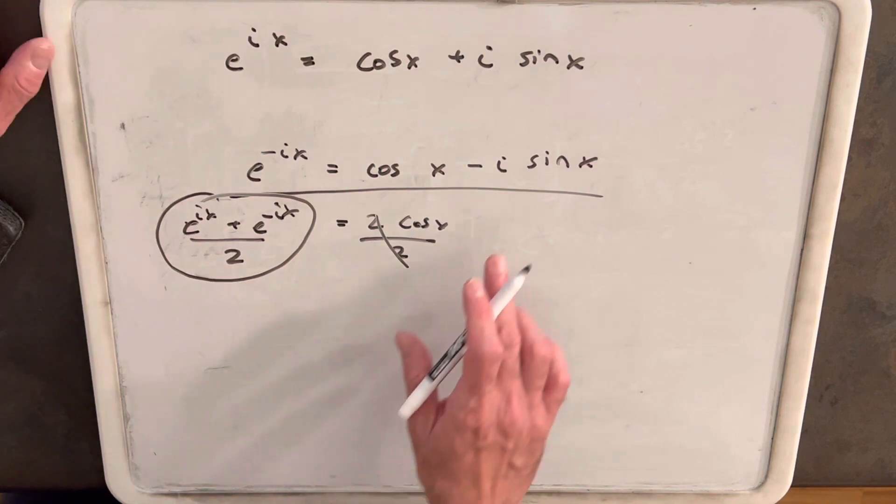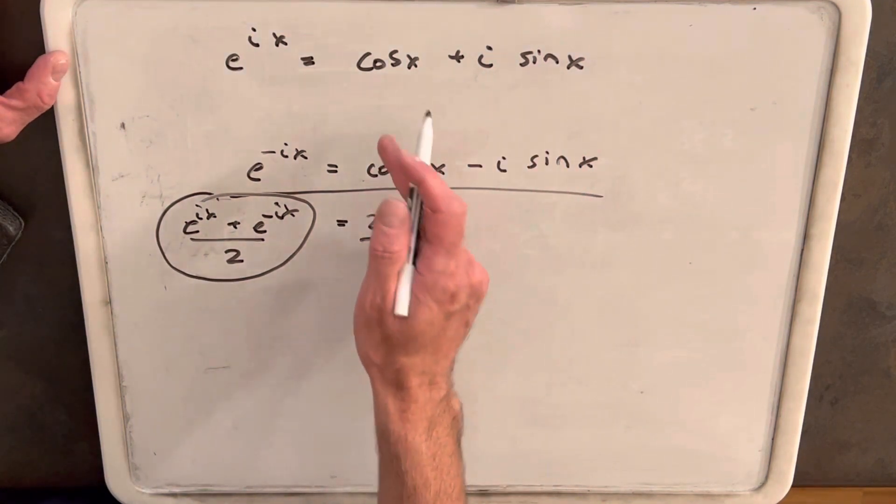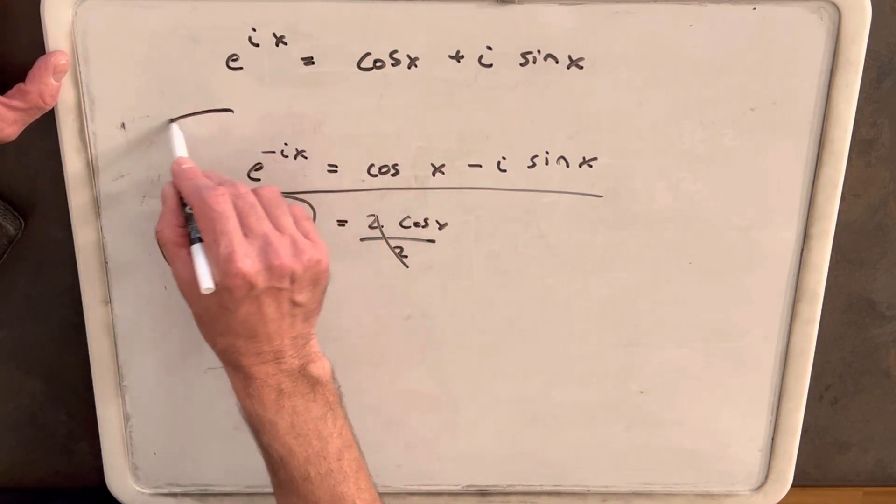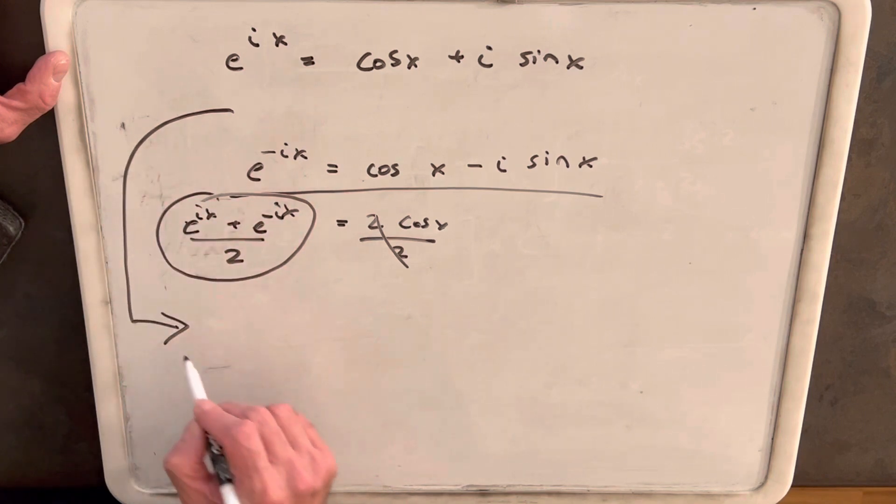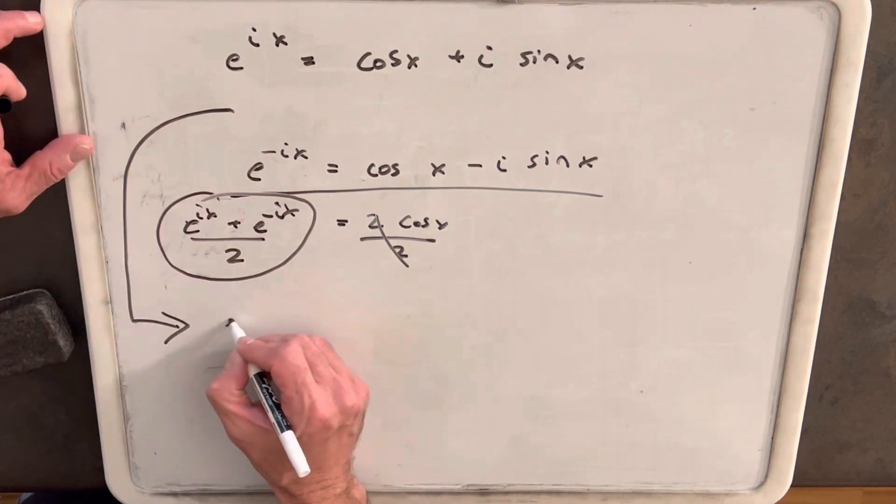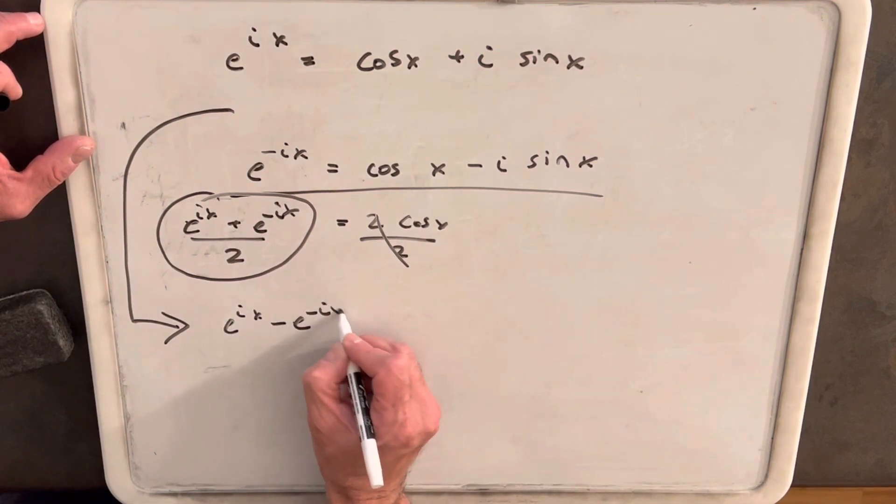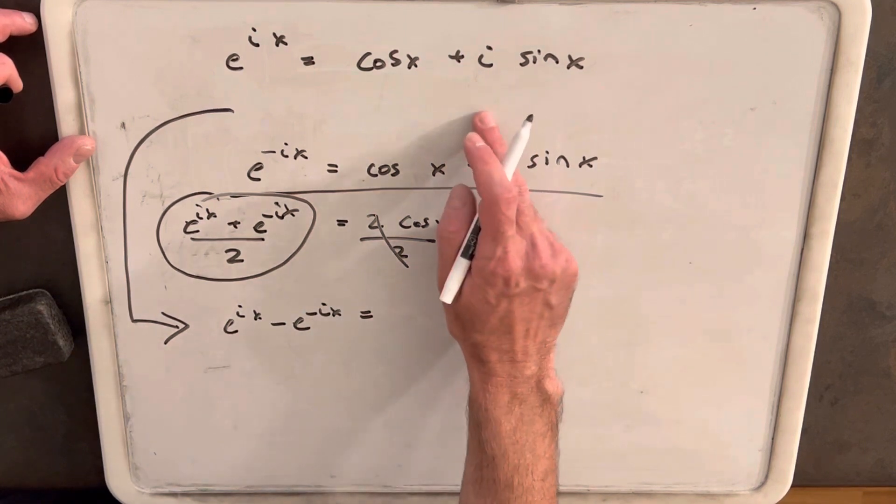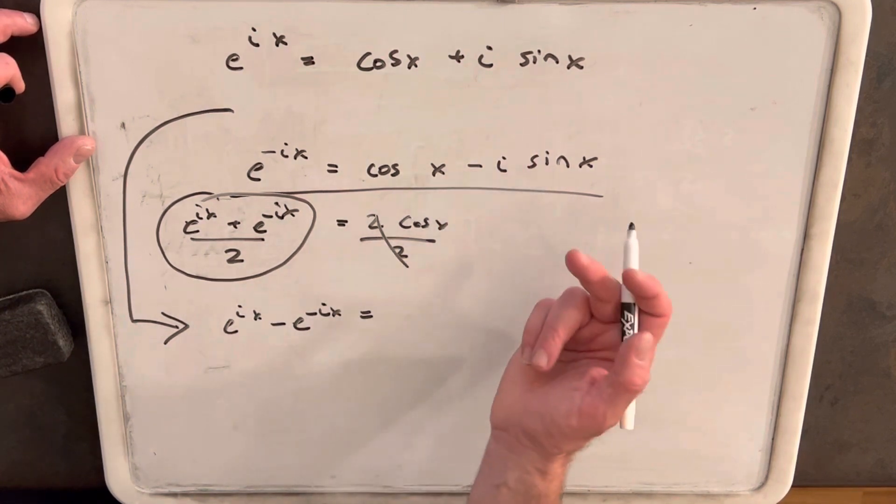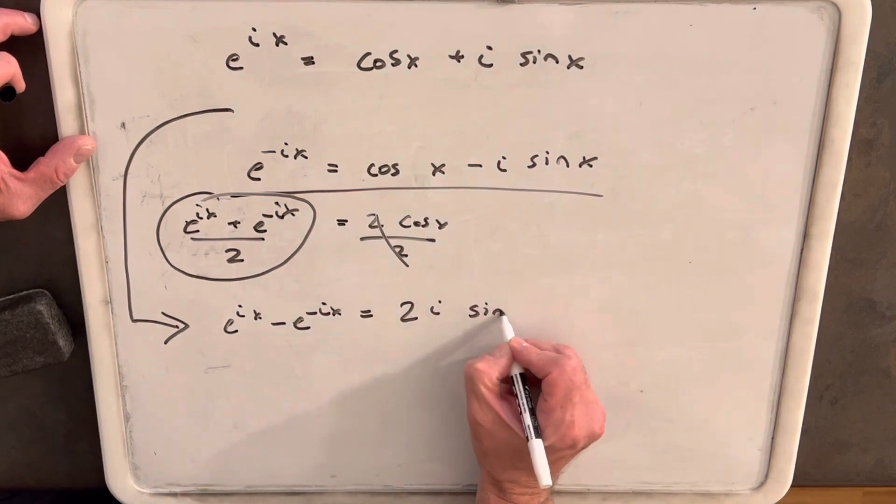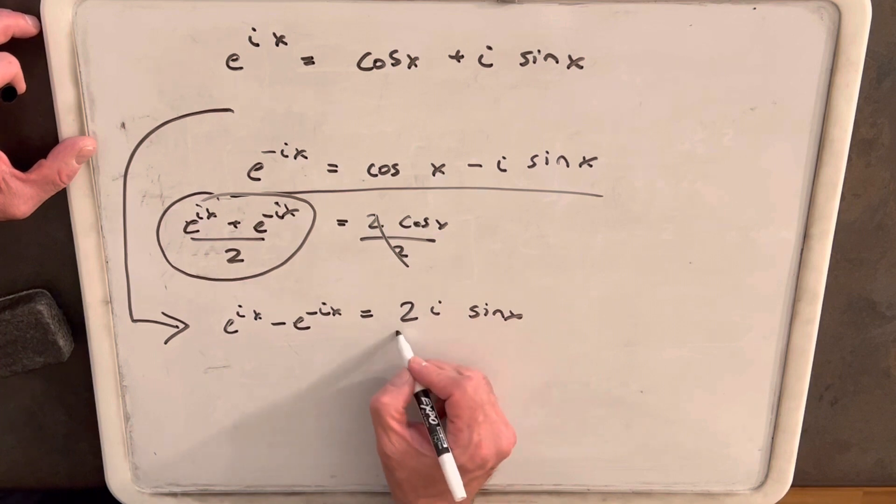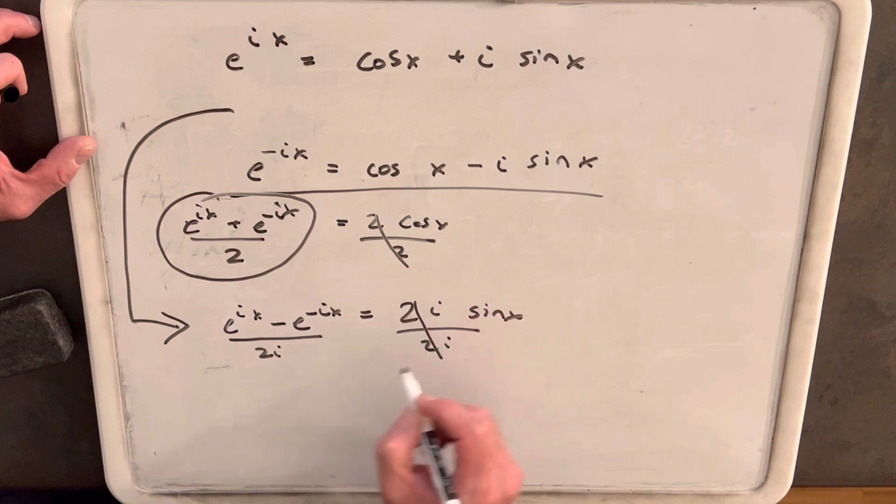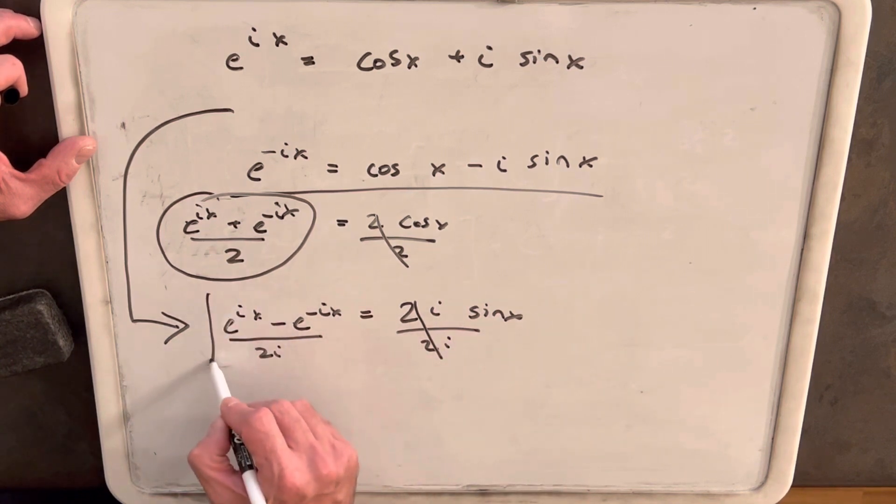Then, in order to find the sine value, all we need to do is subtract both these equations, because then cosine is going to cancel out. So if we subtracted those, we'll subtract them down here. So then we'll have e to the ix minus e to the negative ix. Our cosines cancel, but then the negative will turn this negative i sine x to a positive, and we're going to end up with 2i sine x. But we want to solve for sine x, so we'll divide both sides by 2i.